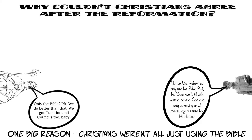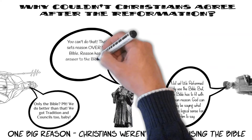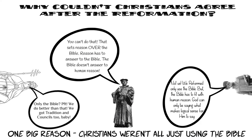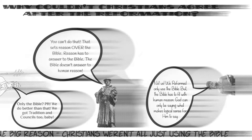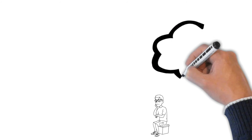For many of these non-Lutheran reformers, human reason became a source for beliefs that you could go to right alongside Scripture. Since these different groups were going to two different places — the Bible and their own human reason — it's not surprising they came up with different beliefs than the Lutherans, who were insisting that the Bible alone is the source for our beliefs, and that human reason must submit to what the Bible says, not the other way around.